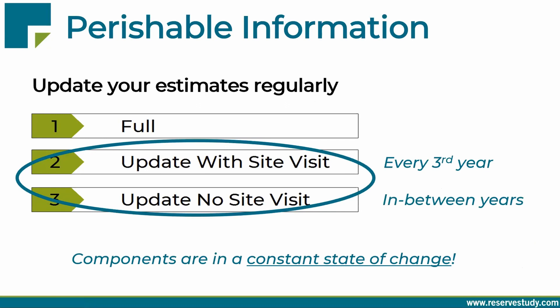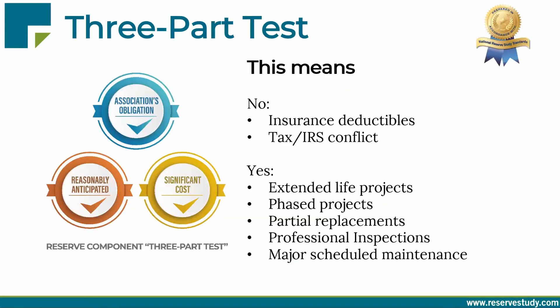We are in the business of estimating — projecting the future based on what we know today — and that's the key. As time goes by, we can refine our estimates. Most of you probably know there are three reserve study levels of service. Most associations only need to do a full reserve study — the top level of service — once, to measure and count all assets and identify the reserve component list. But best practice now is to do a with-site-visit update at least every third year to catch changes like inflation or projects that didn't occur exactly as planned, with inexpensive no-site-visit updates in between years.